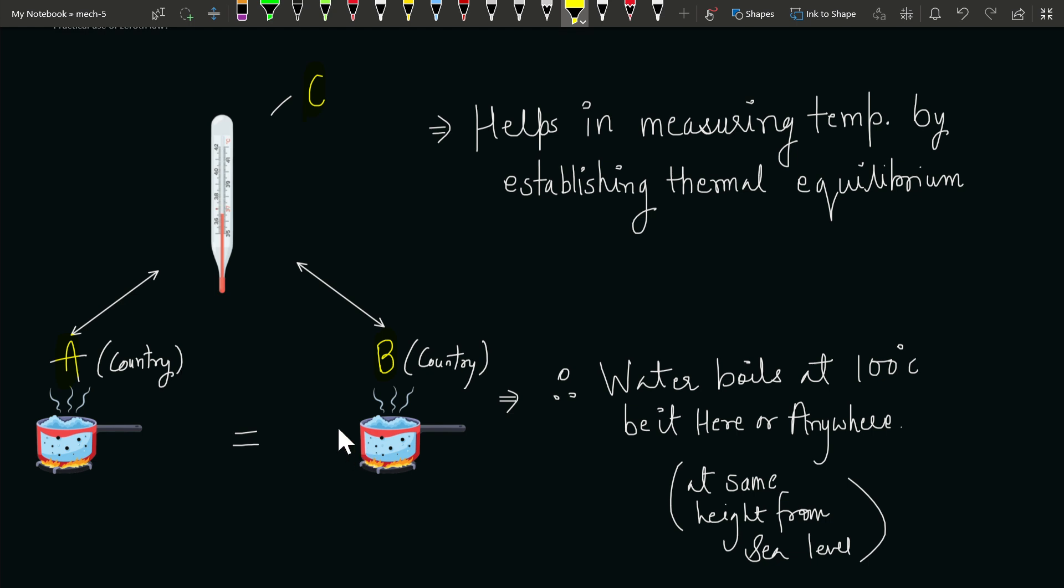So what I do is first I go to country A, and there I establish thermal equilibrium between this thermometer and this boiling water. Then I move to country B and again I establish thermal equilibrium with the boiling water there.